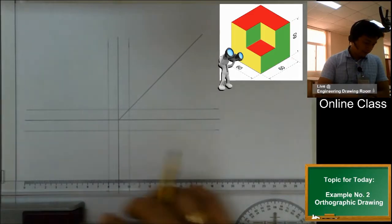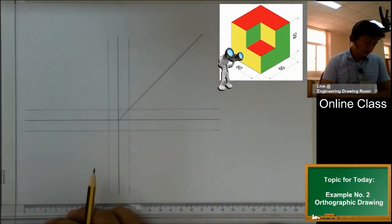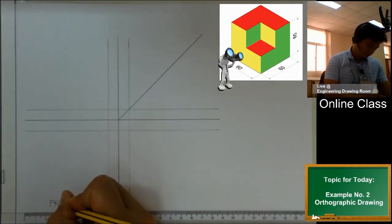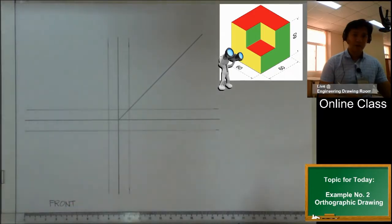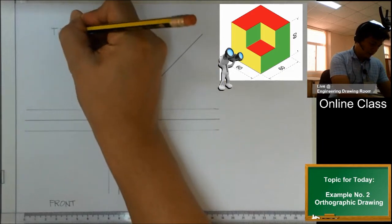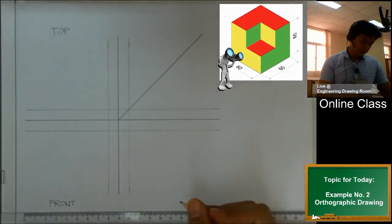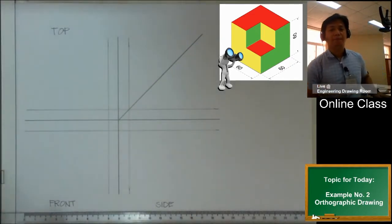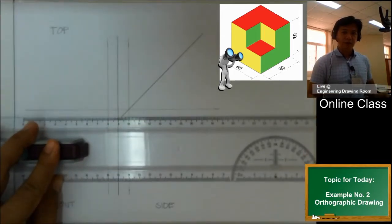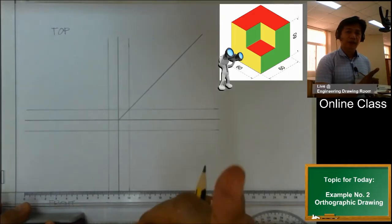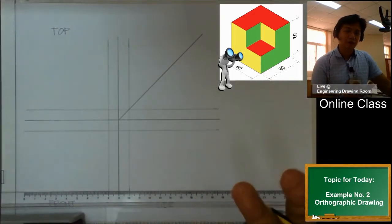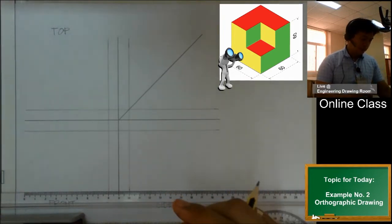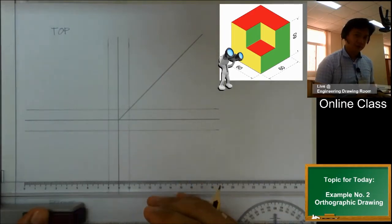Let us locate our three main views. Our front view is located here. Our top view will be right on top of our front view, and our side view will be on this side. Just like in my previous videos, in our isometric drawing we have three main dimensions: namely the width, the depth, and the height.